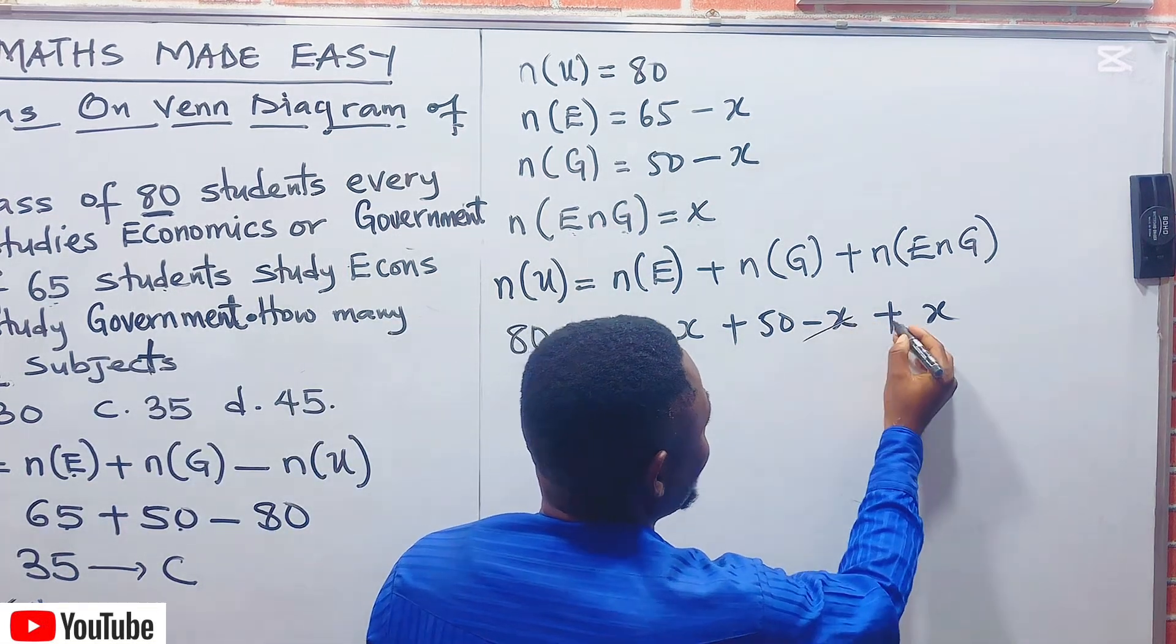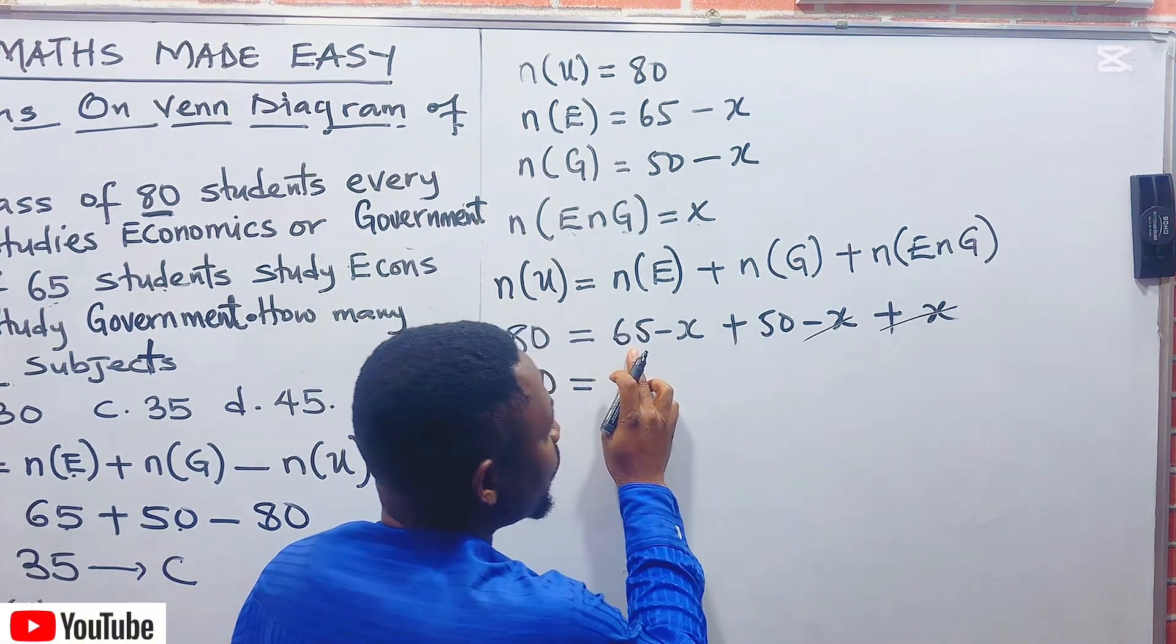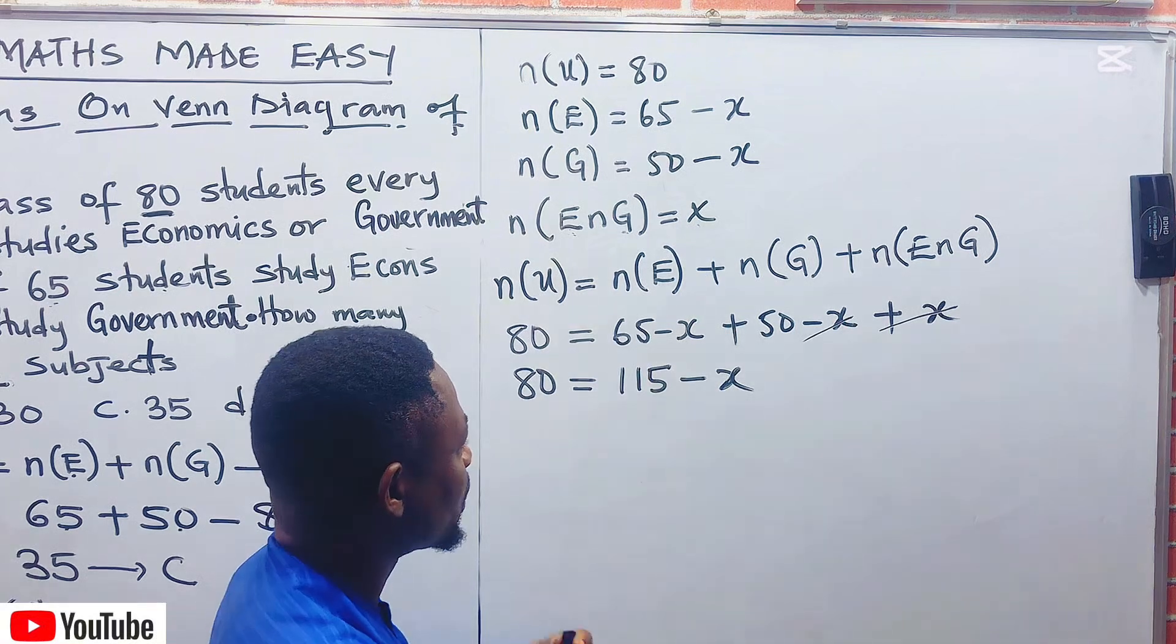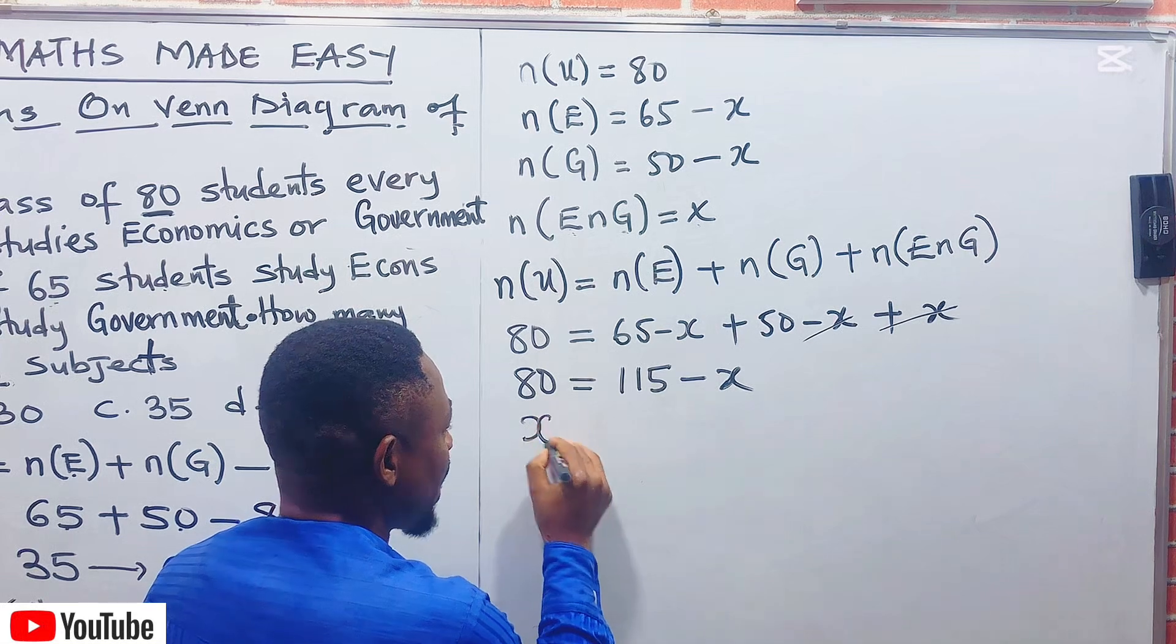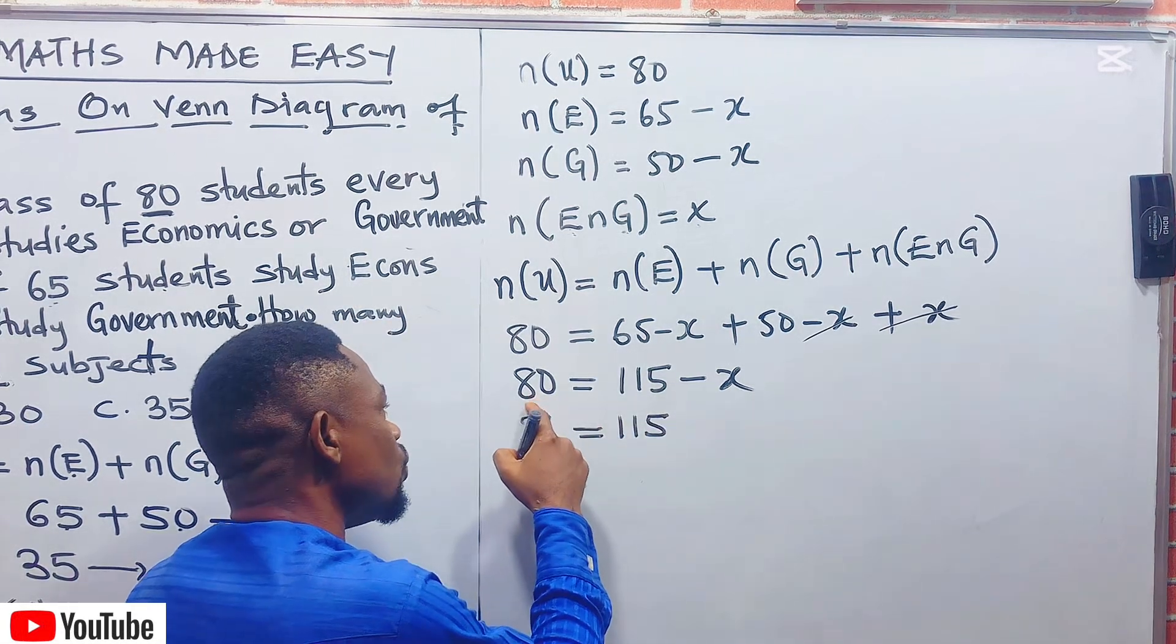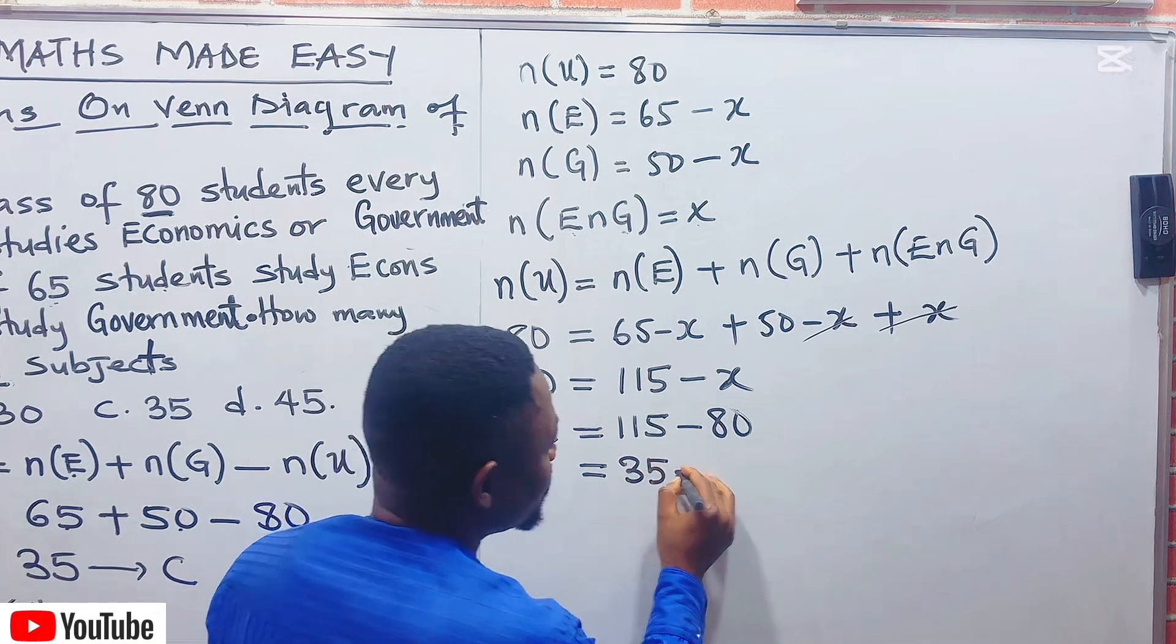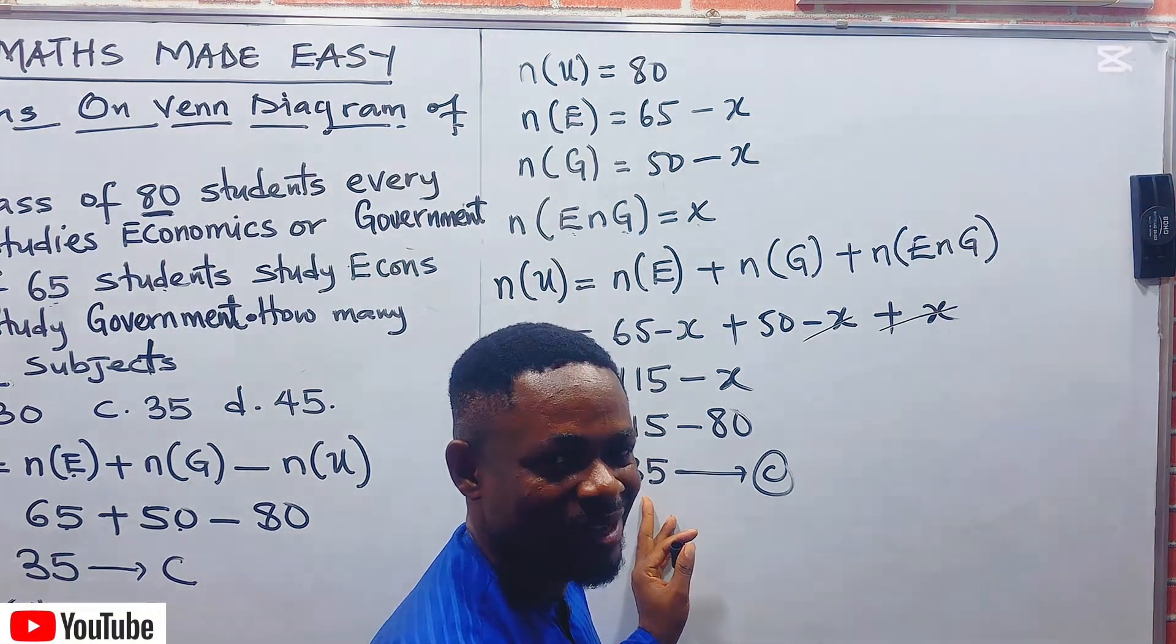What is the next thing? We do collection of like terms. Carry minus X this way, it will now become X. Then equal to 115. This 80 will move to the right, it will give you minus 80. When you minus it now, what will be the answer? It is 35. Can you see by justification, we have gotten it as also 35. Have I made myself clear?